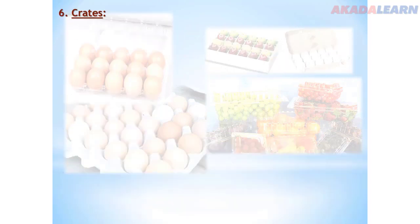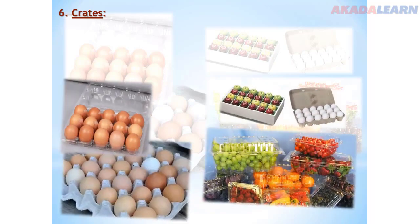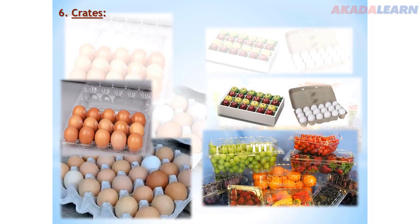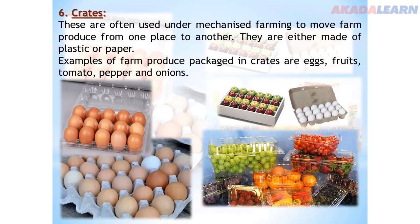Number six: crates. These are often used in mechanized farming to move farm produce from one place to another. They are either made of plastic or paper and can be used for packaging eggs, fruits, tomato, pepper and onions.